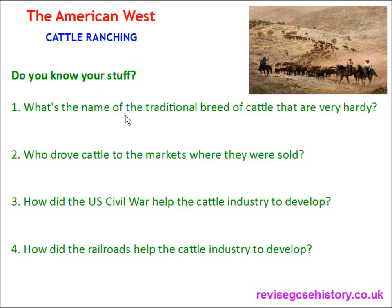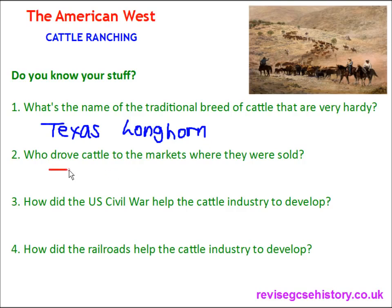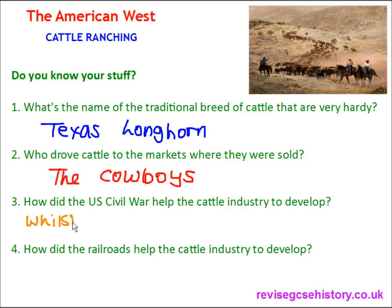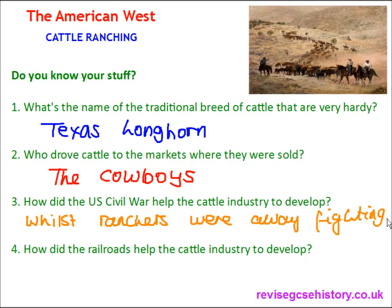Question one: What is the name of the traditional breed of cattle that are very hardy? This breed of cattle is called the Texas Longhorn. Question two: Who drove cattle to the markets where they were sold? These people were the cowboys, and we're going to be looking at the cowboys more in a later video. Question three: How did the US Civil War help the cattle industry to develop? Whilst ranchers were away fighting, the size of herds grew — herds of cattle increased because the cattle were reproducing independently.